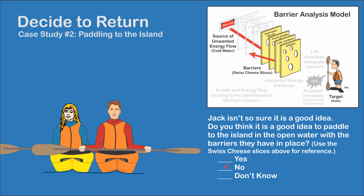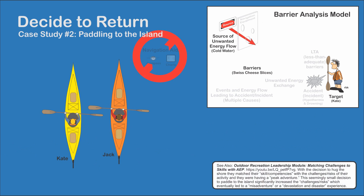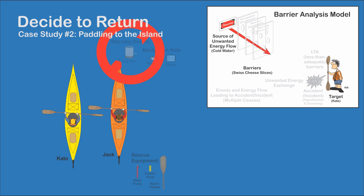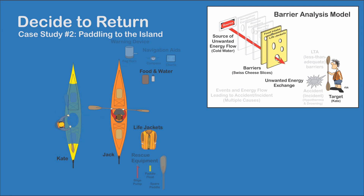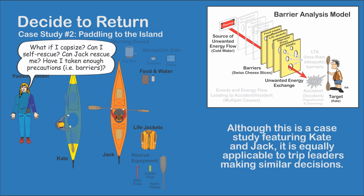The barriers that had minor impact when hugging the shore now have a major impact. Without charts and navigational skills, they underestimated the distance to the island. Without a paddle float, Kate is unable to self-rescue, and Jack doesn't know how to assist her rescue when she eventually capsizes. Fog sets in and they are unable to warn other vessels. Kate experiences fatigue — she is not keeping hydrated or fueling her engine. When she eventually capsizes, her life jacket keeps her afloat but provides less than adequate protection against the cold water. Without a wetsuit, dry suit, or rescue, Kate becomes hypothermic, and without assistance from a passing lobster boat, she would eventually succumb to hypothermia.